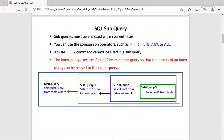Now what is a subquery? The query within the query is called the subquery. Sometimes it is also called inner query or inner select. As you can see in the diagram we have four queries. The first one is the main query. Within the body of the main query we have another query called subquery1, then within subquery1 we have subquery2, and within subquery2 we have subquery3.